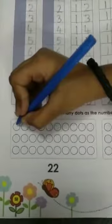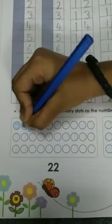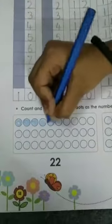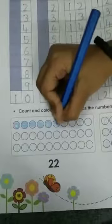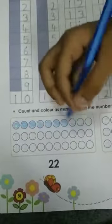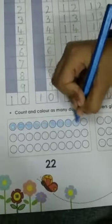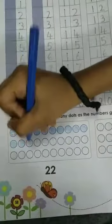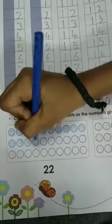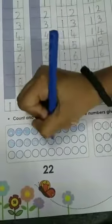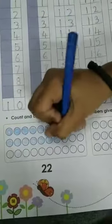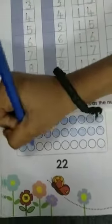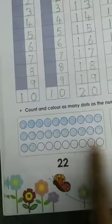Okay, count and 1, 2, 3, 4, 5, 6, 7, 8, 9, 10, 11, 12, 13, 14, 15, 16, 17, 18, 19, 20, 21, 22. So this is, these are, there are 22 dots, okay?